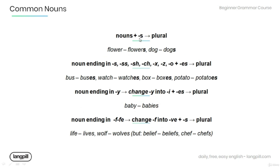When we add 's' to a noun, it becomes plural — more than one. For example: flower → flowers, dog → dogs. For nouns ending in s, ss, sh, ch, x, z, or o, we add 'es' to make the plural.